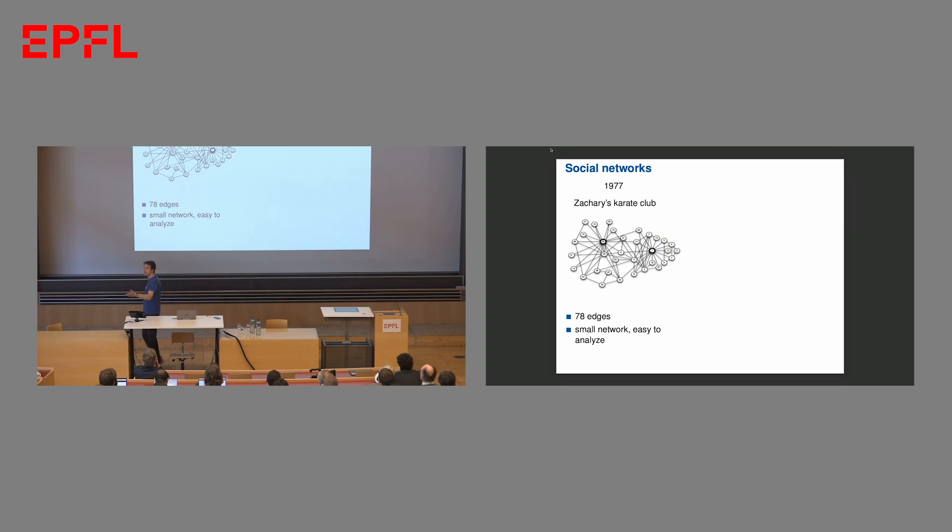A lot of data that we get today comes in the form of graphs, like social networks, and we like to analyze them. Here's a classical example of social network analysis from 1977. This is known as Zachary's Karate Club result. This is about an analysis of a breakup of a Karate Club into two factions and this is one of the first uses of graph theory in social network analysis. It turns out that this social structure broke up exactly along a minimum cut in the social graph.